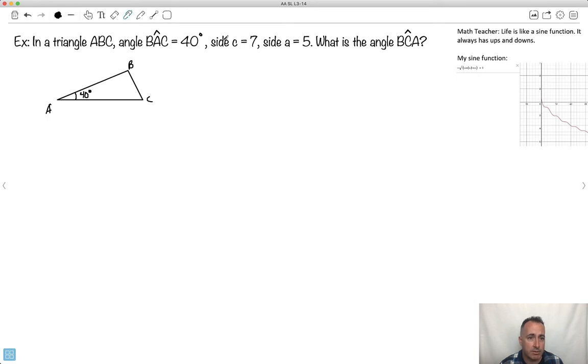I also know side C is 7, this one here is 7. And side A is 5. So the question is, find BCA. In other words, BCA, I want to find this angle right here. That's what I'm looking for.